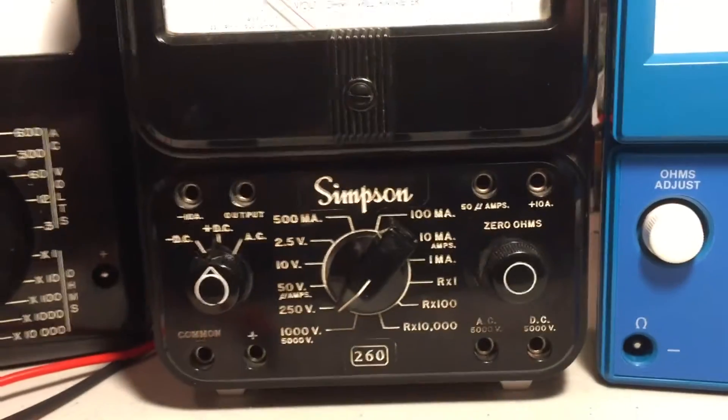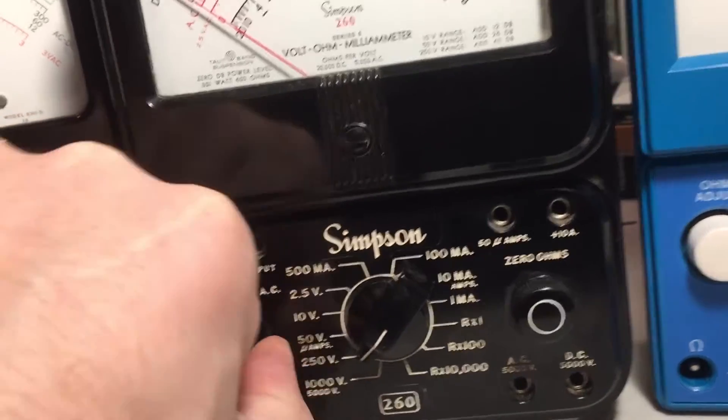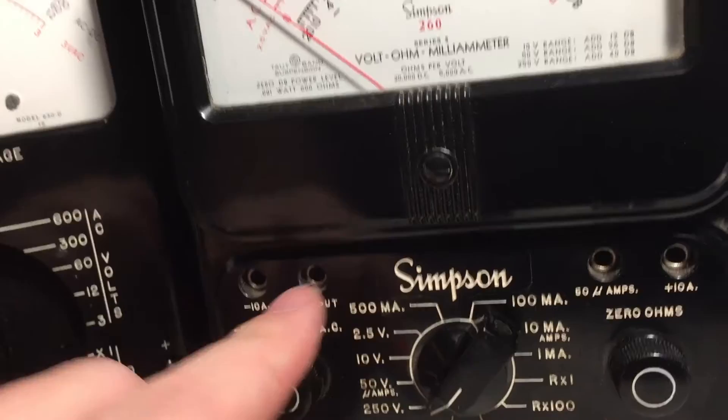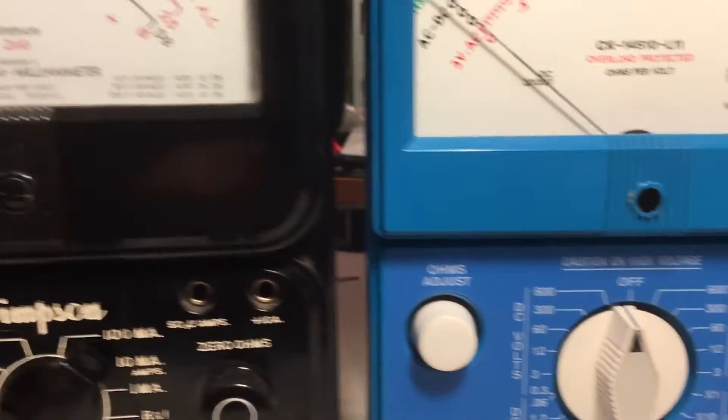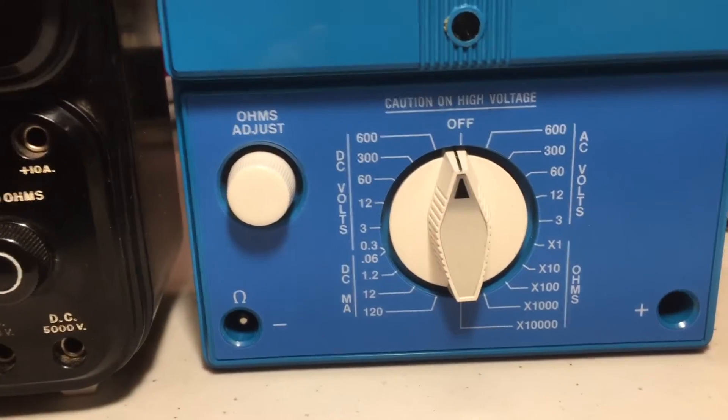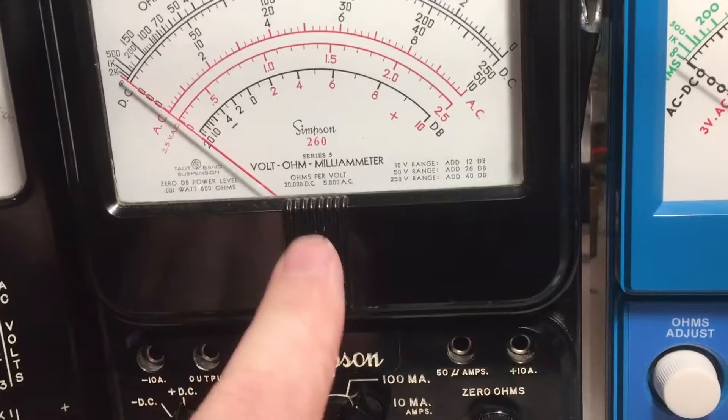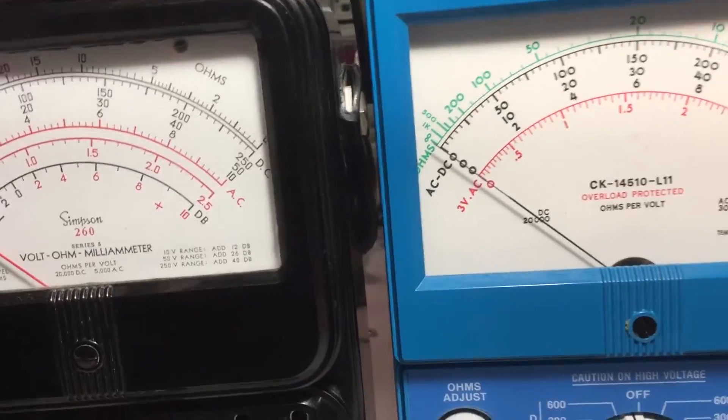Also the 260 does have the nice plus and minus feature as well as the output jack which AC couples the AC measurement reading through a capacitor. This one does not, the AC volts does not go through a capacitor. So you can see that they're pretty similar looking meters. They have this kind of classic lines that Simpson uses. So let's take a look inside.